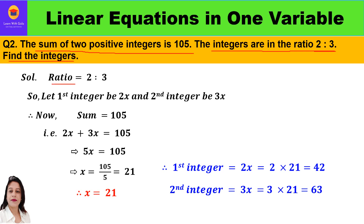Again, the ratio is given as 2 is to 3, so we start with the ratio. Let the first integer be 2x and the second integer be 3x. The sum of these two integers is 105, so we can say 2x plus 3x is equal to 105.